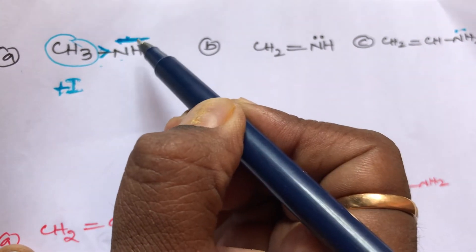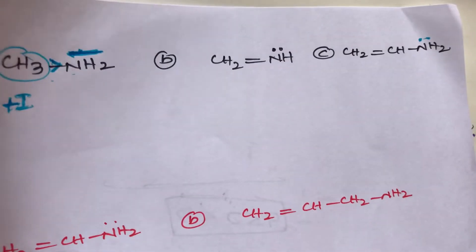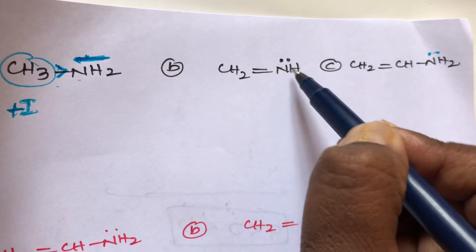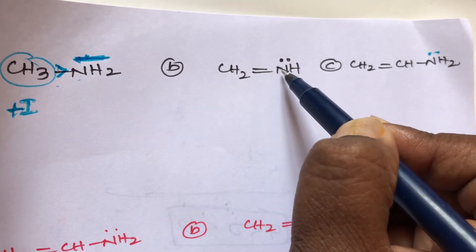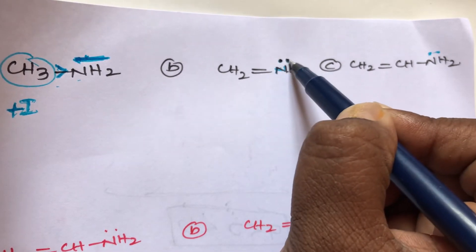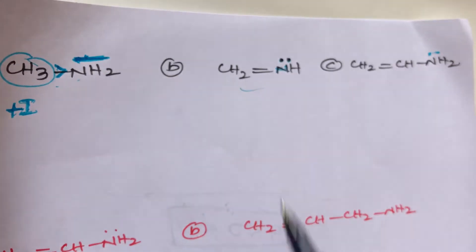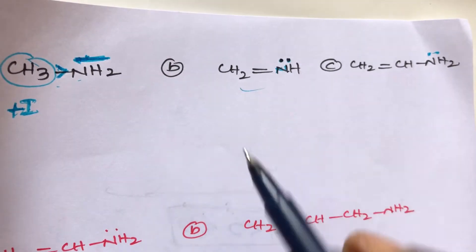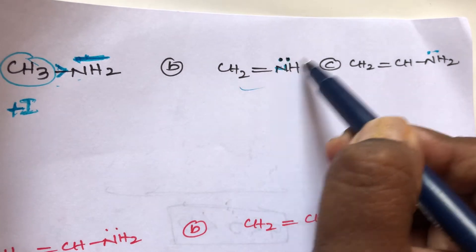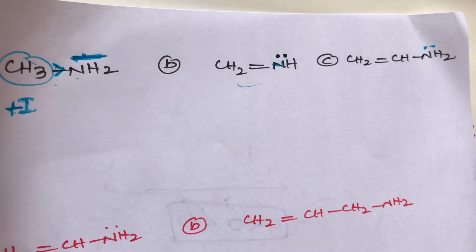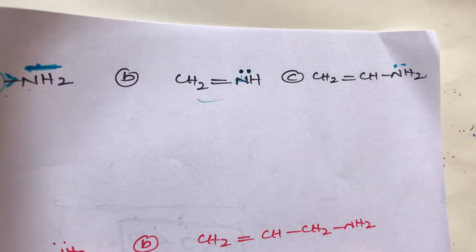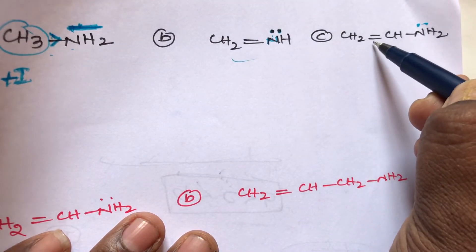Now compound B is a double-bonded compound: CH2 double bond NH. This double-bonded nitrogen has one lone pair. This lone pair does not change — the double-bonded nitrogen does not participate in any resonance. So the lone pair on compound B remains unchanged.